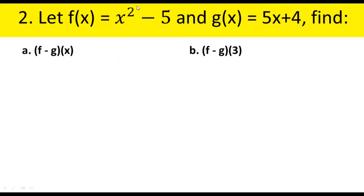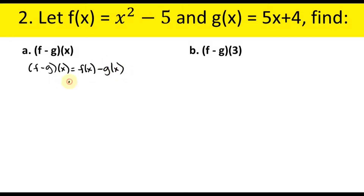Example number 2: let f of x equals x squared minus 5 and g of x equals 5x plus 4. Find letter a: (f minus g)(x). Using the formula, (f minus g)(x) equals f of x subtract g of x. Substitute: x squared minus 5, subtract the quantity 5x plus 4.